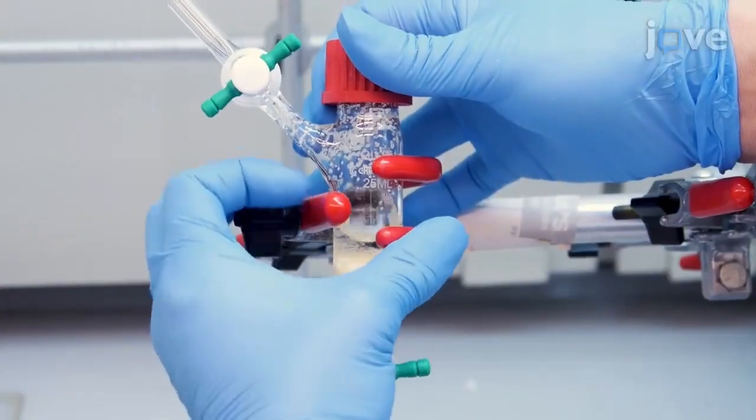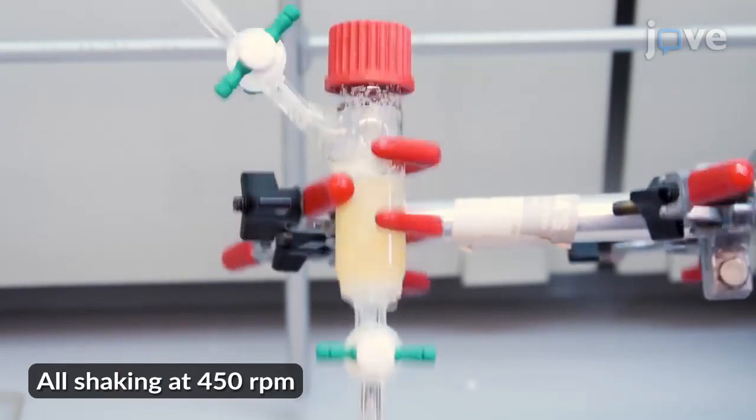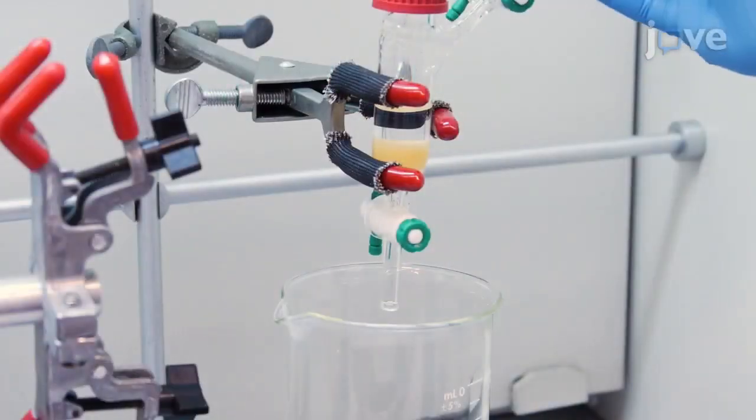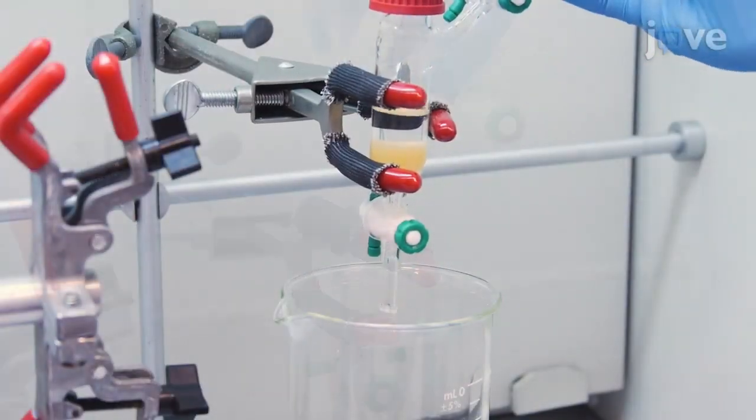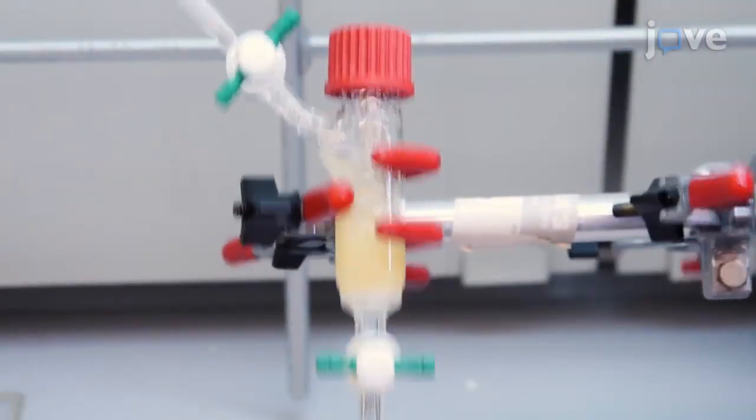Cap the vessel and agitate it for 24 hours on a shaker at room temperature to load the resin with furfurylamine. Then drain the furfurylamine-bearing resin and agitate it for about 3 minutes in 5 milliliters of DMF to wash it.